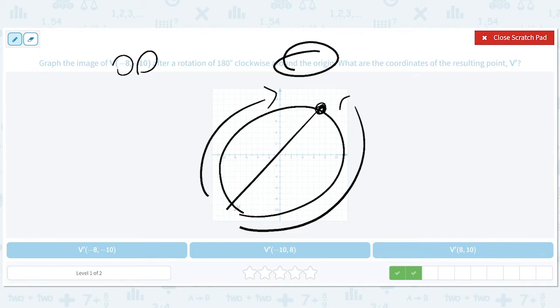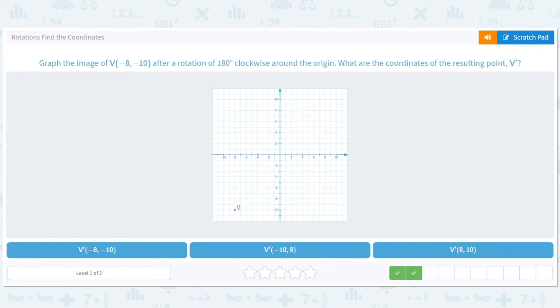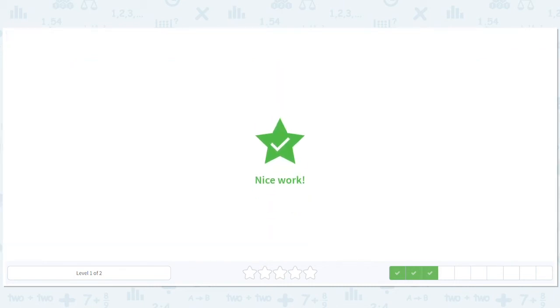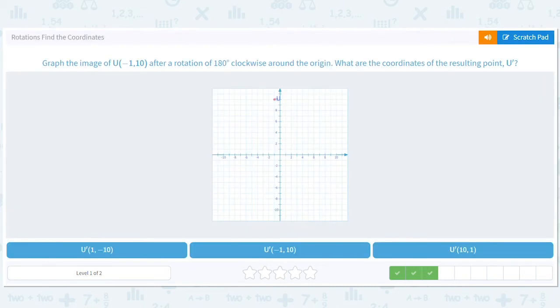So this will be 8, 10. Okay. We see the pattern. So negative 1, 10 will go to 1, negative 10.